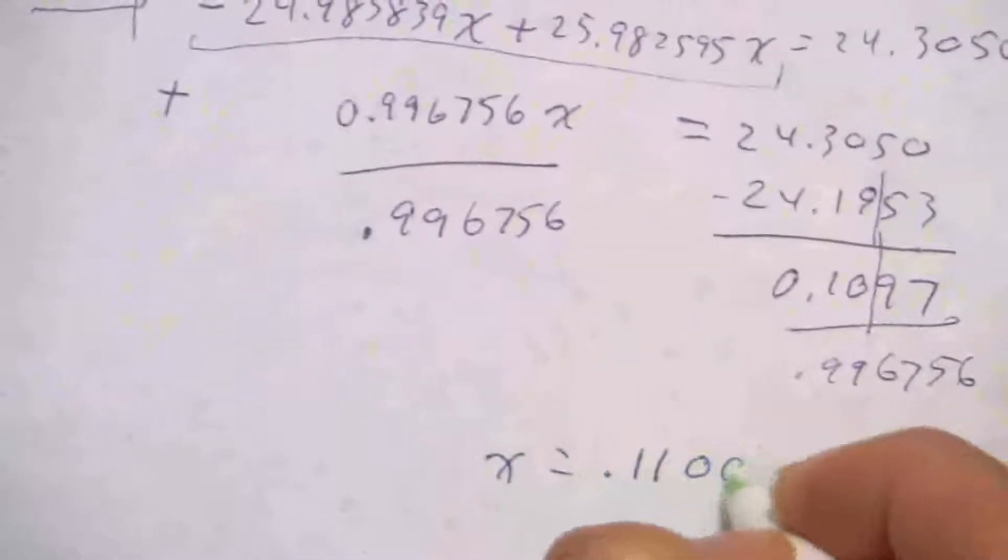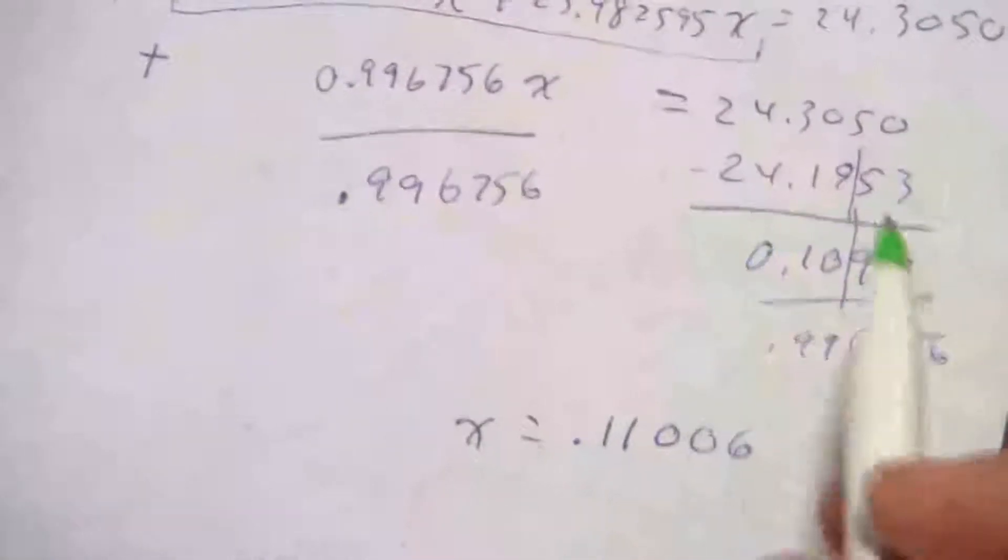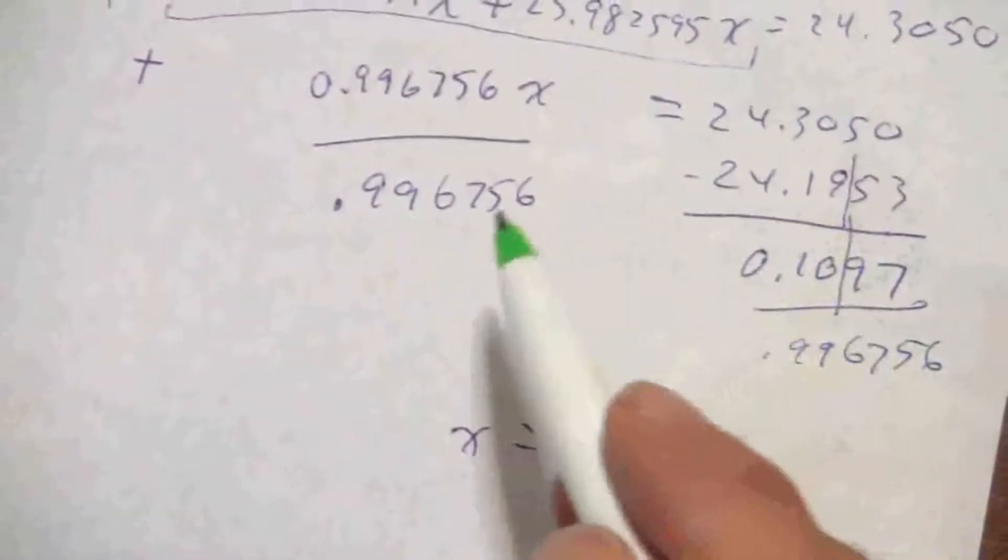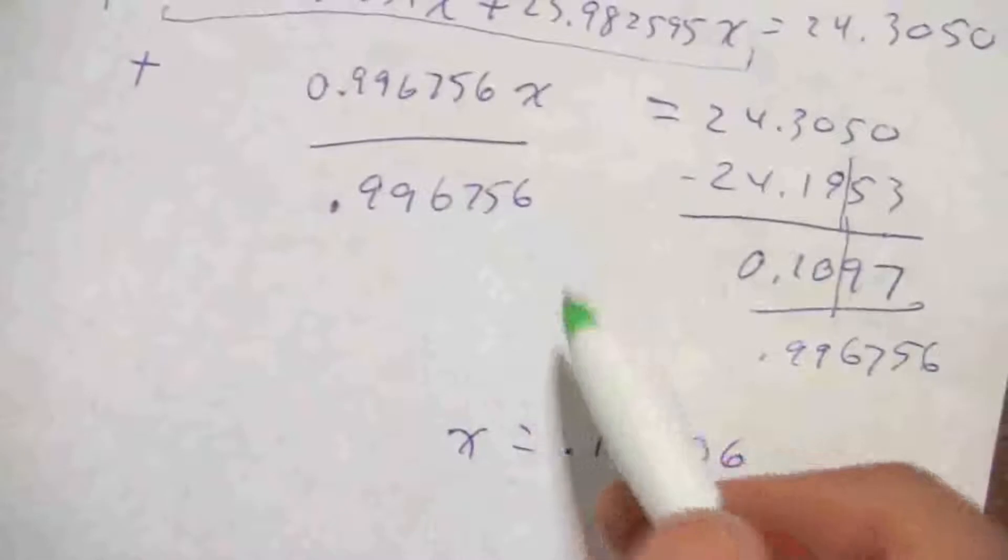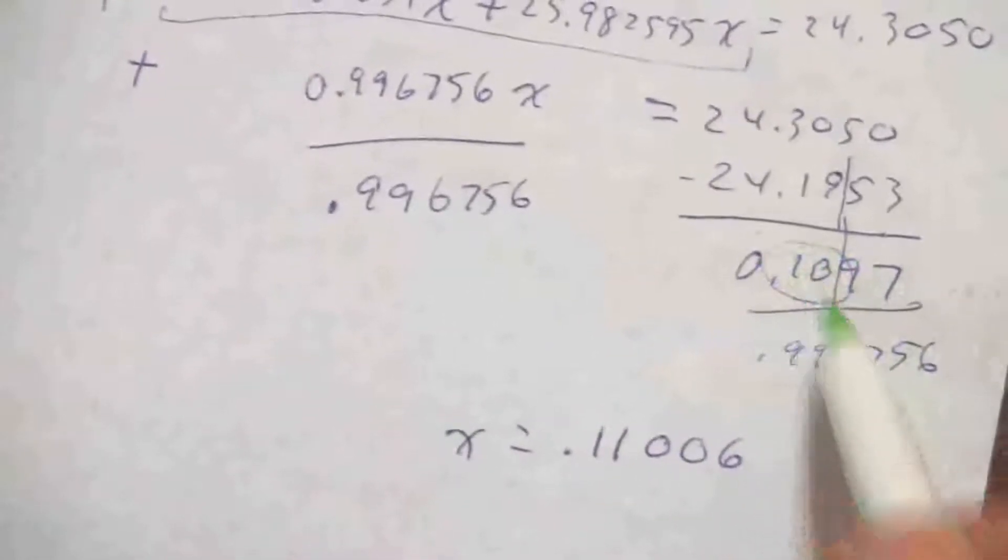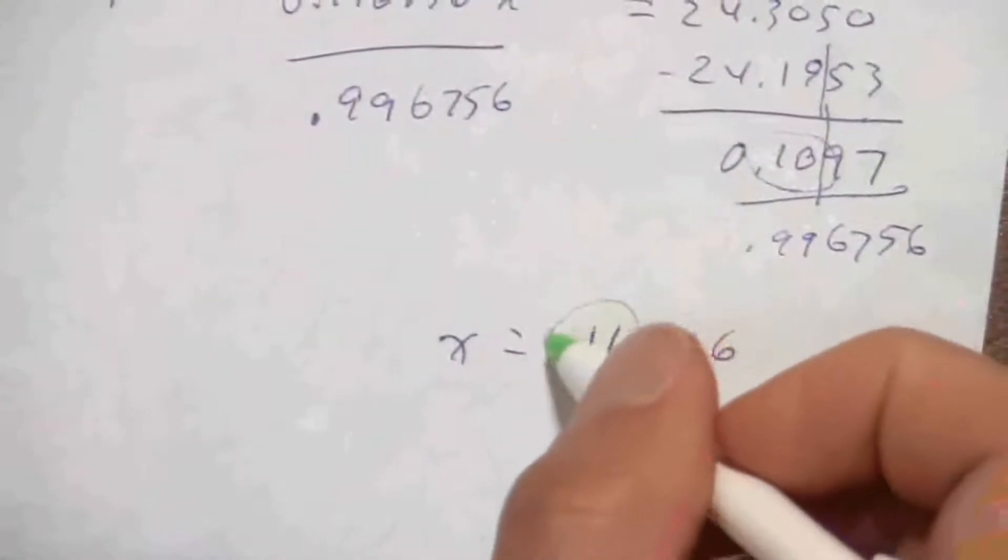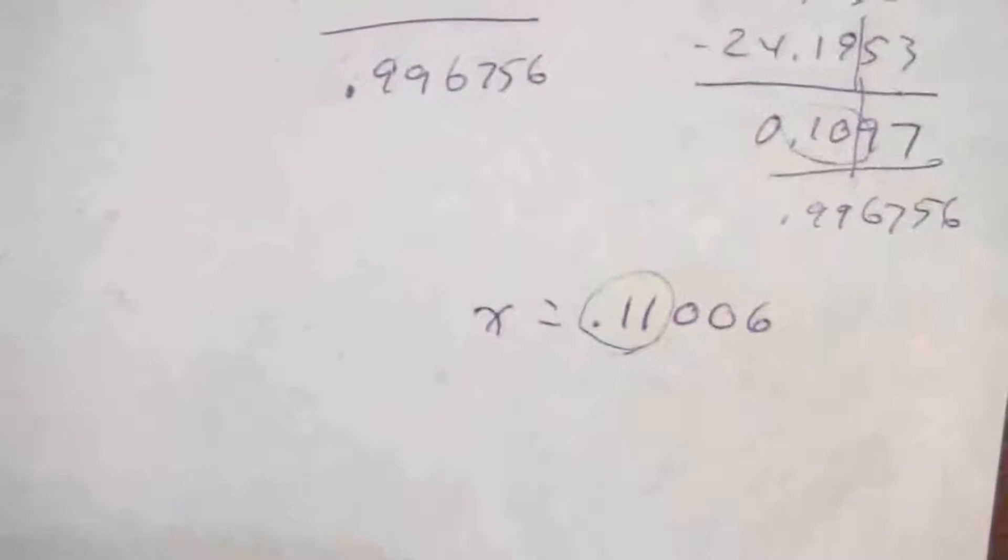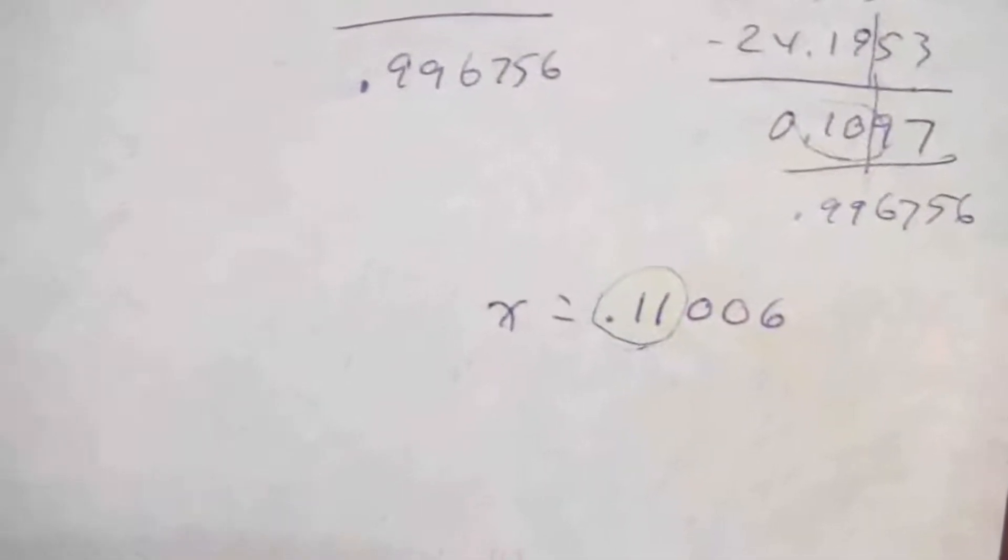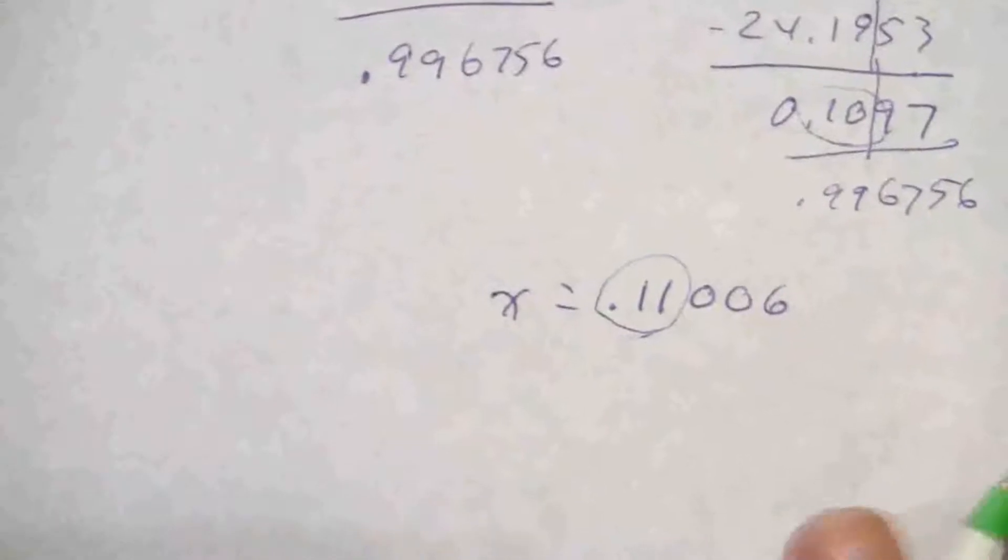How many significant figures? Well, I have a bunch of them here that I'm dividing by, but I only have two there, so really I can only say to two decimal places what that value for x is. So x is 0.11.